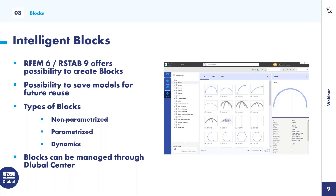There are three different types of blocks. For non-parameterized blocks, you simply save an existing model as a block and insert it as a solid block in your models. It is also possible to add parameters to change a property in your model on every insert. The third type is dynamic or intelligent blocks, where you can link a JavaScript file to your block and create multiple inputs and parameters with that code.